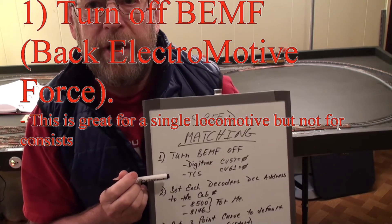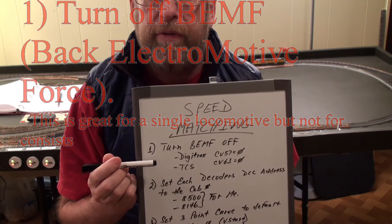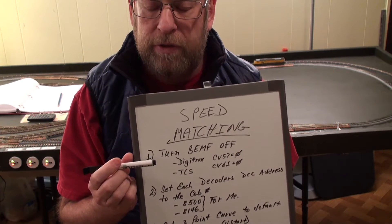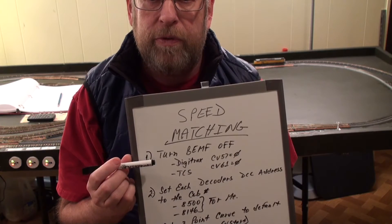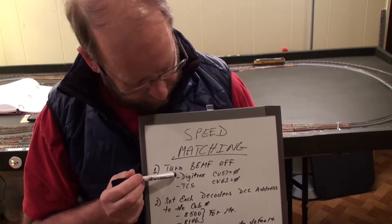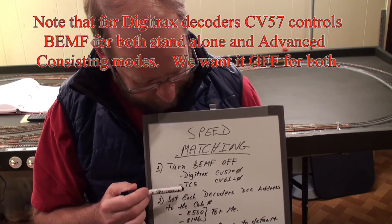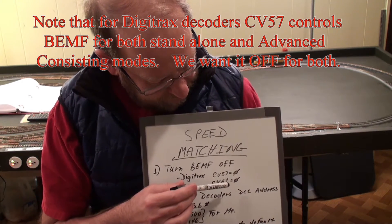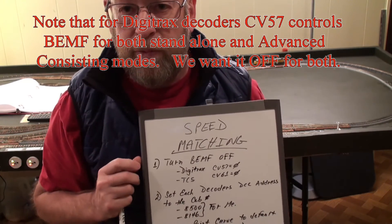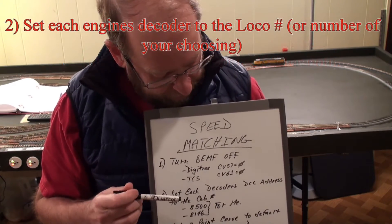First, you need to turn off Back EMF — whatever it's called. It works great for a single locomotive, but if you have multiple locomotives with it, they fight against each other. If you have a Digitrax unit, CV57 has to be set to zero. If you have a TCS unit, CV61 has to be set to zero. With the locomotives I have today, I have one Digitrax and one TCS.